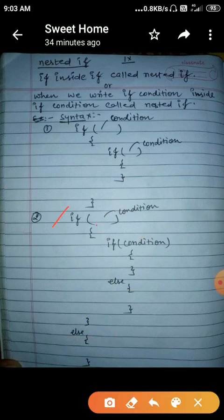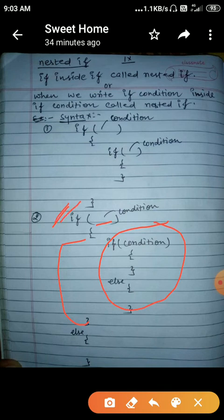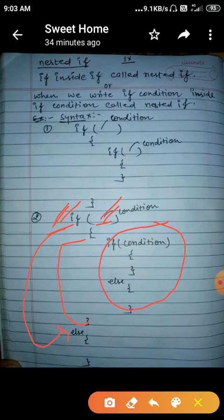Once again: if this outer condition is true, then this part will execute, and inside you have if with else. Suppose this outer condition is false, then the cursor will come directly into the outer else part, and the inner block will not execute.